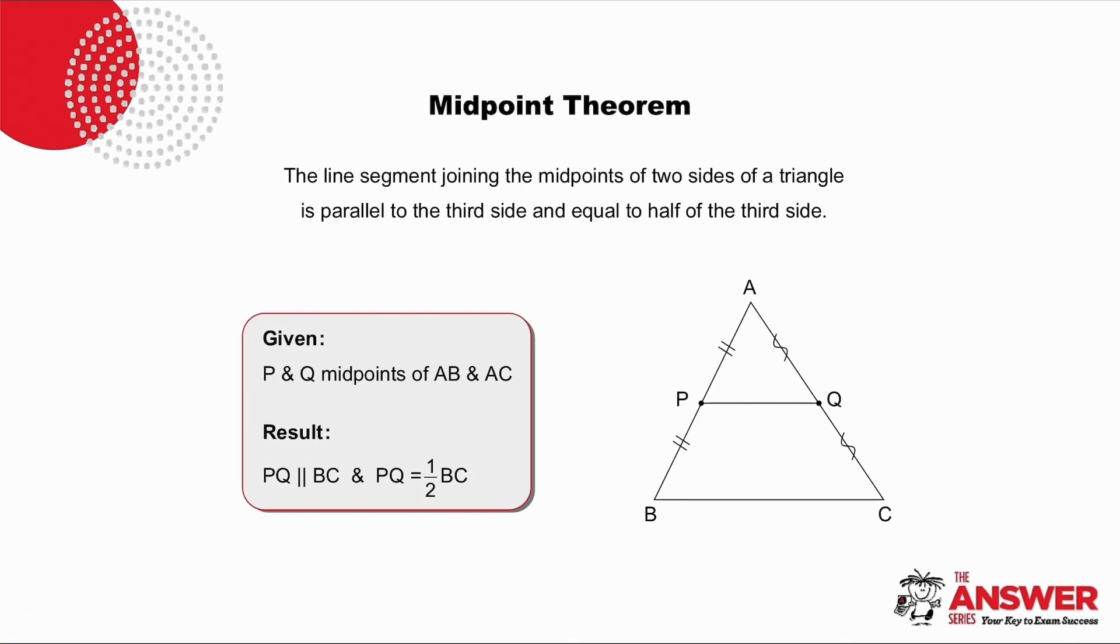The midpoint theorem packs a punch. So if we have a quick look, midpoints P and Q are given, and in this situation, if we join the midpoints up, we get PQ, and the length of PQ will always be exactly half the length of BC. In addition, PQ will be parallel to BC.